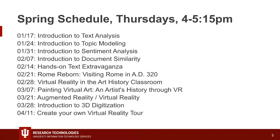Then we're going to talk about document similarity on the seventh, using latent semantic analysis. It can tell you about documents in your corpus that are most similar to each other, which can surface really interesting things you might not have picked up on. It can also talk about words in a corpus most associated with another word — so as an early modernist, I might think I know how Shakespeare uses a certain term, and maybe it shows up with something I didn't expect at all.